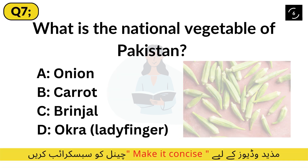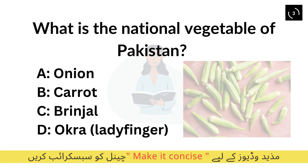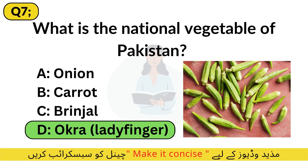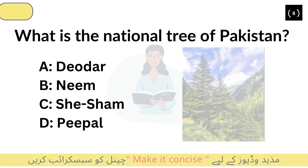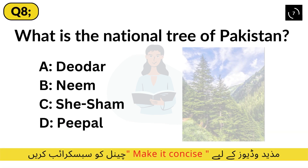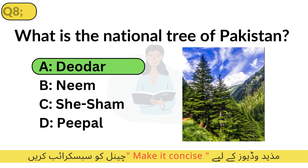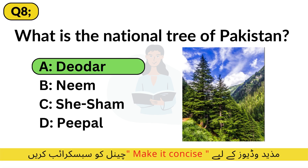Question 7: What is the national vegetable of Pakistan? Correct answer is Okra. Question 8: What is the national tree of Pakistan? Correct answer is Deodar.